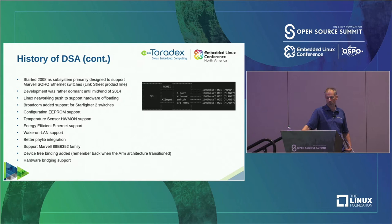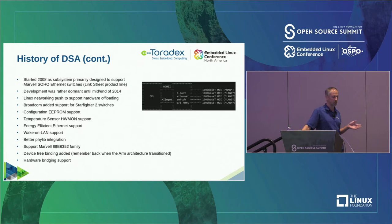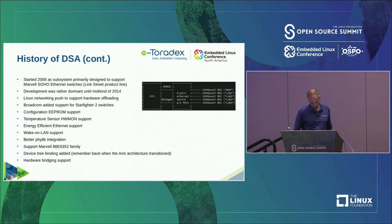Until around mid to end 2014 there was more push towards supporting switches, especially around hardware offloading. More people were getting interested in how to offload routing so you don't use CPU cycles to route packets. One of the first drivers outside of the Marvell SOHO stuff was Broadcom adding support for the Starfighter 2 switches. Then infrastructure was added — for example, a lot of switches allow a configuration EEPROM, and the regular kernel EEPROM subsystem was used to allow reading and writing that EEPROM through the switch.